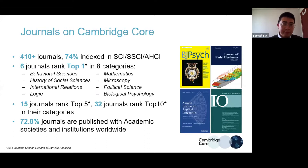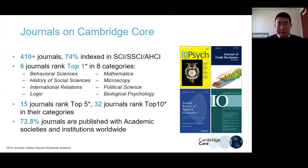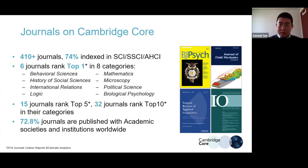Regarding journals: we have about 410 journals, and 74 of these are indexed in SCI, SSCI, or AHCI. Six journals ranked top one in their individual categories — across about eight categories — including mathematics. We are a top three mathematics publisher in the world. CUP is also the number one politics publisher in the world. We have 15 journals ranked in the top five, and 32 journals ranked in the top ten in each category.